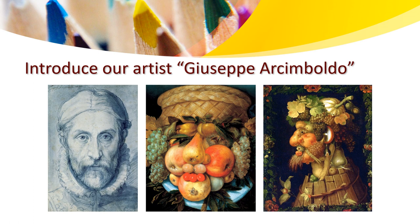Yes, it's true. He used fruits and vegetables from different seasons. He applied some grapes and a pumpkin — if you can see. Where do we see grapes or pumpkin? Which season do we see them? Yes, it's true. This is a self-portrait of the autumn season.